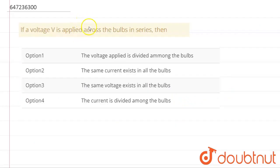What is the question? If a voltage V is applied across the bulbs in series, then: Option 1, the voltage applied is divided among the bulbs. Option 2, the same current exists in all the bulbs. Option 3, the same voltage exists in all the bulbs. Option 4, the current is divided among the bulbs.